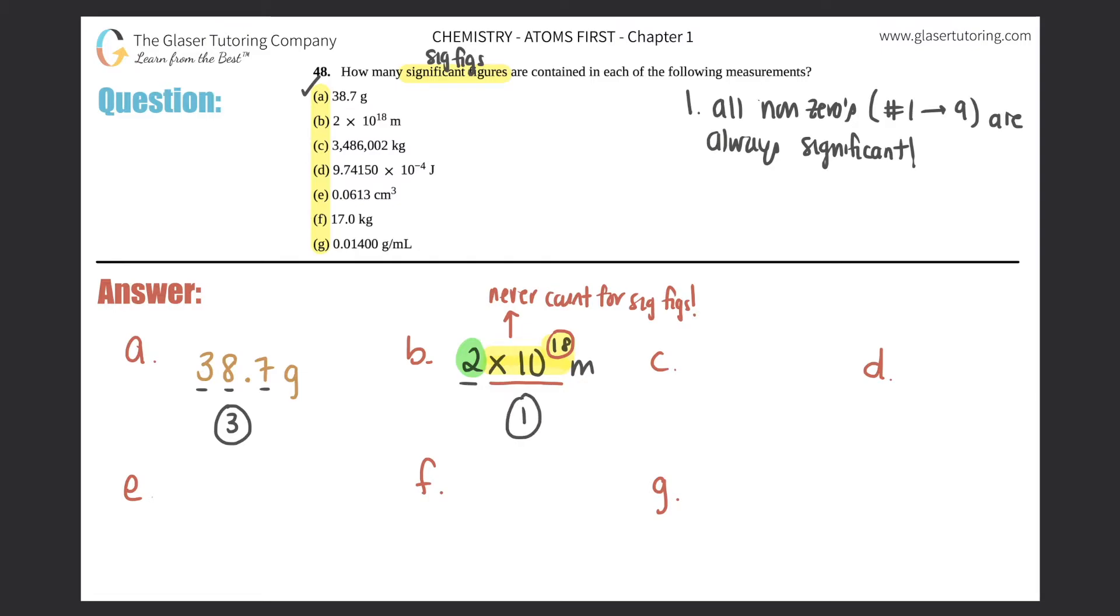Letter c: 3,486,002 kg—three million, four hundred eighty-six thousand, and two kilograms. Always start with your non-zeros, so I got one, two, three, four, five—at least five sig figs here. But now I see zeros. There's actually three rules for zeros. What do you think these zeros are? Are these in the middle, the end, or the beginning? They're right smack in the middle, between a six and a two. So we call these middle zeros. Rule number two: middle zeros are always significant.